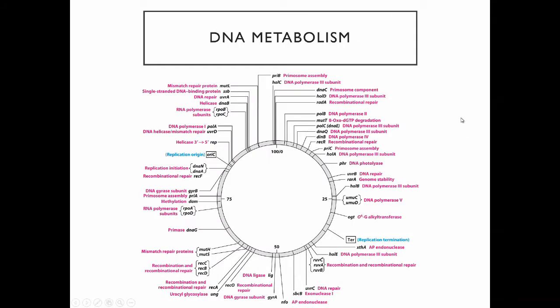Just to give you a sense of how complicated this is, this is a diagram of a bacterial chromosome — a bacterial genome. Bacteria have circular chromosomes, as you may know. Each of these positions is the location of a different gene that has some role in DNA replication, DNA error repair, or some other role in making or breaking DNA. That gives you an idea of how complicated this whole process is, even though you might think it would be simple.